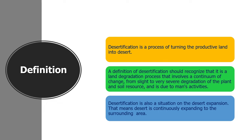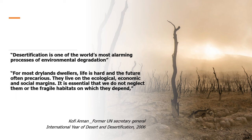Deserts have formed naturally throughout Earth's history. Recently, numerous scientific studies have focused on the possible effects of human activities, poor land management, deforestation, and climate change on desertification. A definition of desertification should recognize that it is a land degradation process that involves a continuum of change from slight to very severe degradation of plant and soil resources.